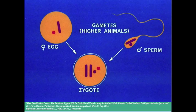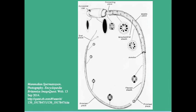The mature spermatozoan is well equipped to go in search of the female gamete, for its sole purpose is fertilization. Here you can see the acrosomal cap equipped with enzymes to break through the outer membrane of the ovum, the strong tail with its characteristic 9 plus 2 arrangement of microfibrils, and the middle piece which contains a high concentration of mitochondria to provide the energy required for the long journey through the female reproductive system.